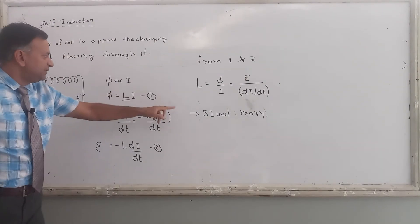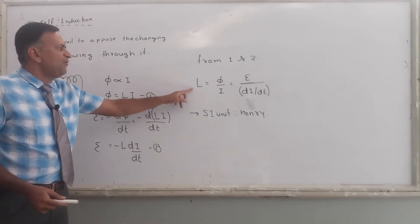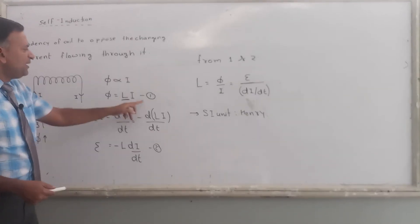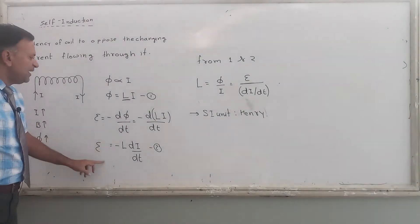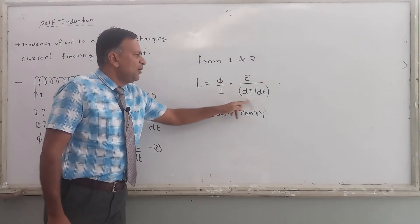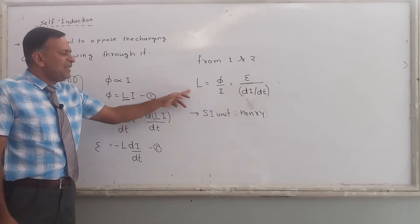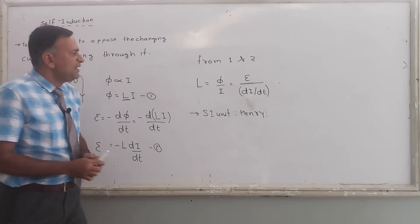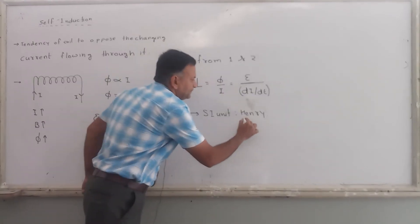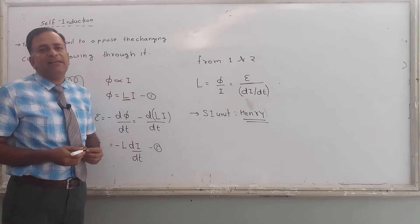From equation 1 and equation 2, I am going to write two values of L. What are these? From equation 1, I get phi upon I. And from second equation, L will be equal to epsilon upon di by dt. Clear? What is L? L is known as coefficient of self-induction. And what is the SI unit of L? It is Henry.